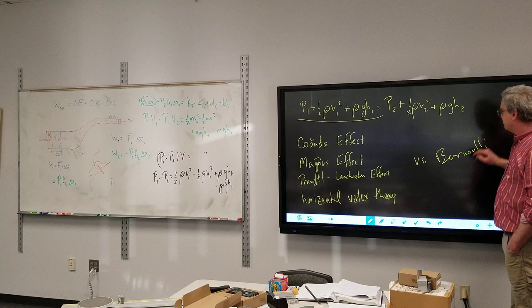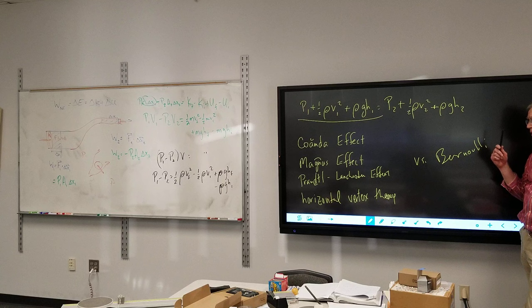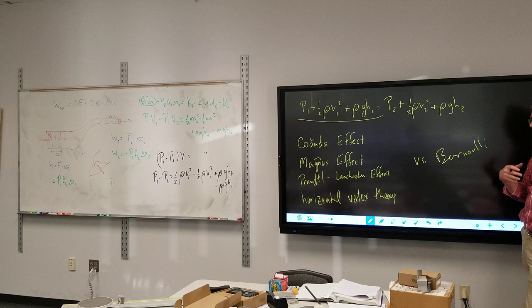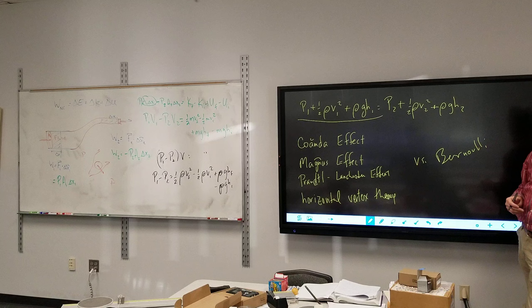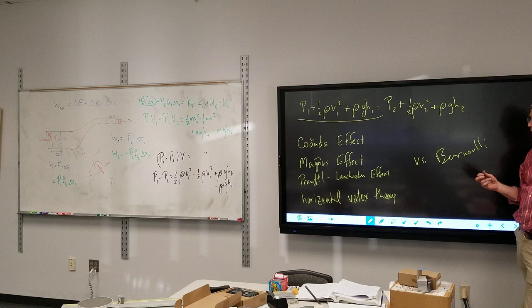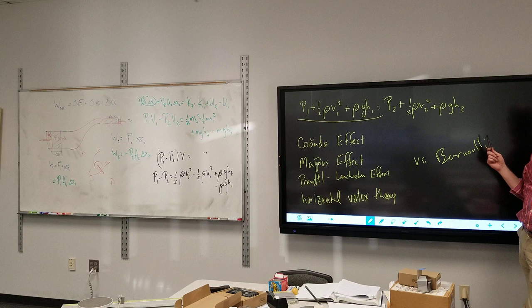So why do physics textbooks get it wrong? They had a mission because they really don't care. Physicists, for the most part, aren't dealing with fluids. This is an engineering problem. Physicists look at it and go, we're still going to call it Bernoulli because it's still a difference of pressure. That part is true. But call it what you want. We're not changing. Because physicists are basically stubborn and pigheaded.